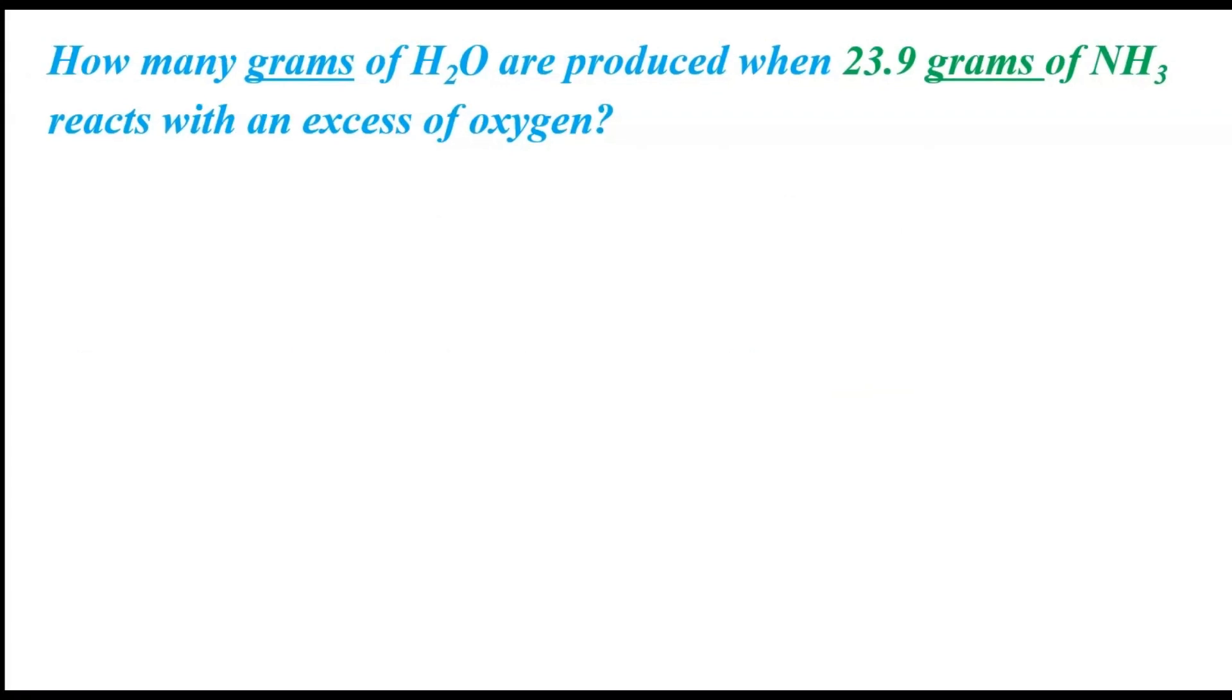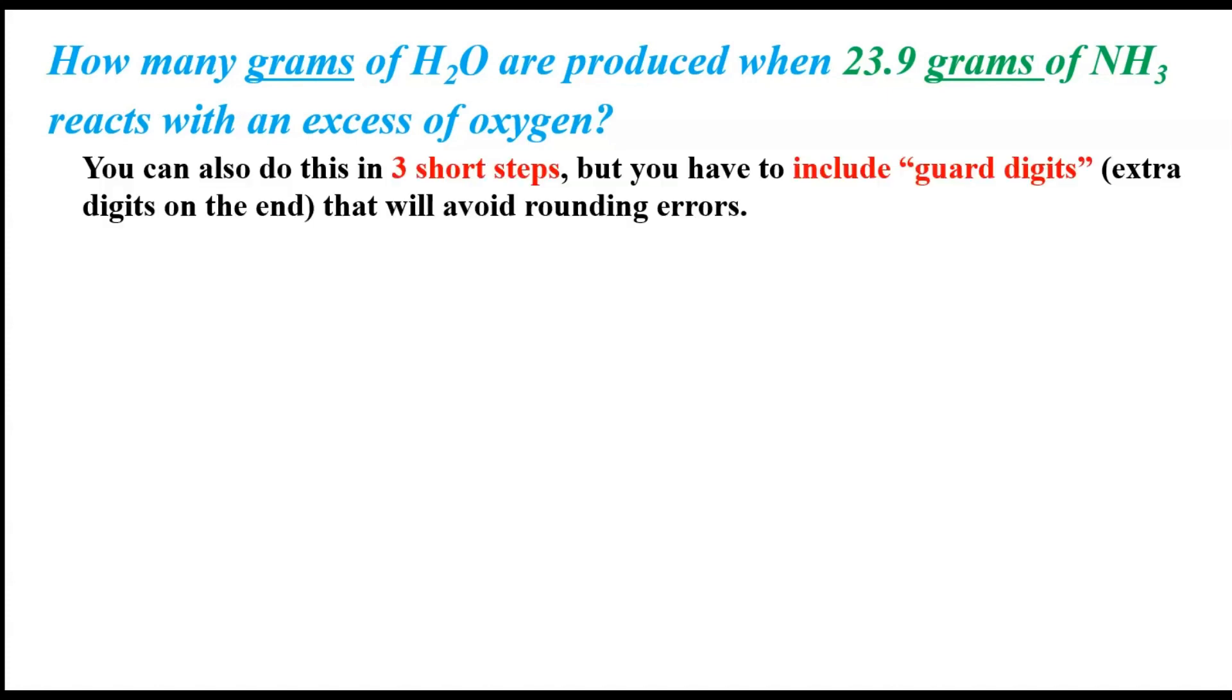There's another way of working this that I find easier, but either way you want to work it, and I'm going to show you this way. It involves, instead of having one big long equation with three conversion factors, you basically have three smaller equations, each with one conversion factor. It just seems easier to follow that way, and the way it works is basically just having three short steps, like I said, but including what's called guard digits, which I'll show you in a second. It's really nothing to include that will avoid rounding errors.